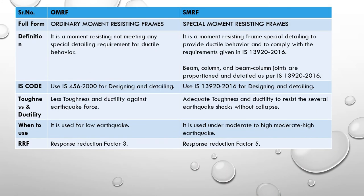The next parameter is the response reduction factor. As mentioned in IS 1893, the response reduction factor for OMRF is taken as 3, and for SMRF the response reduction factor is taken as 5.